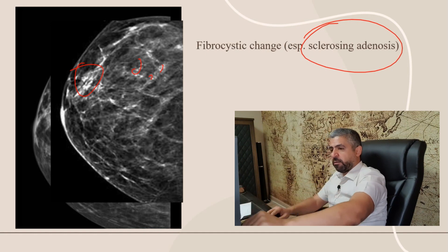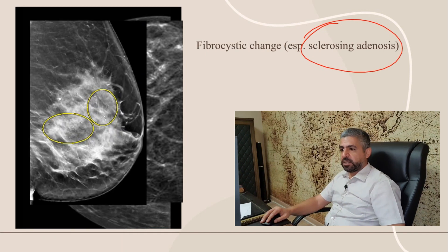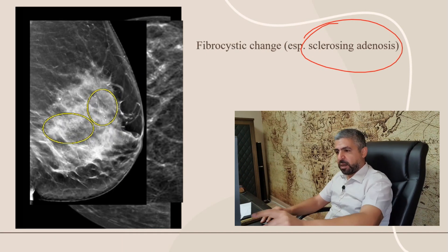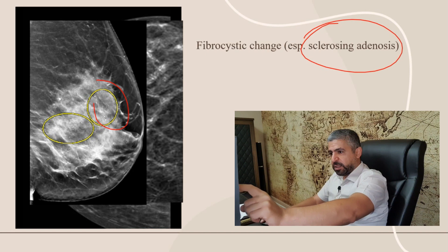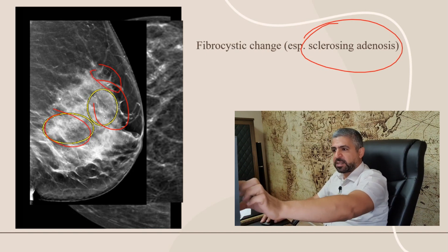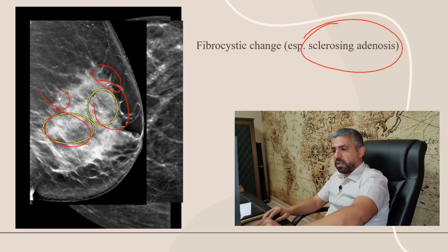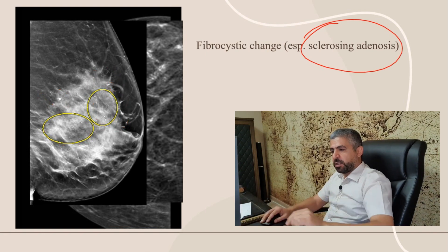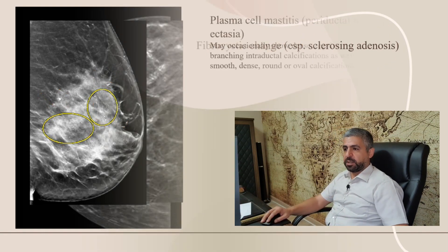Sclerosing adenosis is a kind of fibrocystic change that you have to be careful of because it causes scattered calcifications in the breast. Another example of fibrocystic change — you can see that these calcific foci are not clustered; they are scattered here and there. So it's just a part of fibrocystic change, or what's called sclerosing adenosis.